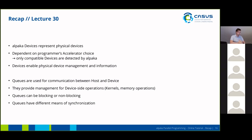Queues are used for communication between a host and a device. They provide management for device-side operations like launching kernels, or memory operations like memcopy or memset. Queues can either be blocking or non-blocking. Blocking queues block the calling thread until the operation has returned. In the non-blocking case, it returns immediately and the queued operation runs asynchronously with regard to the host. Queues also have different means of synchronization: you can wait for the queue, let a queue wait on an event, or let a queue wait for another queue.